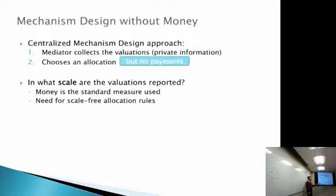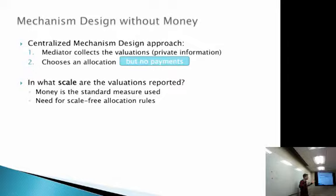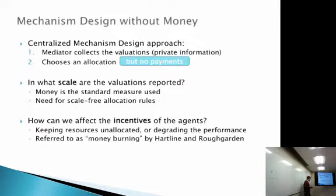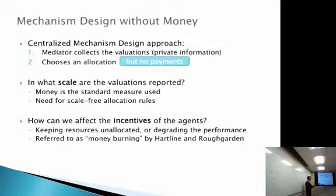Without payments, some questions arise: valuations — how much you value each item — become a strange notion because there's no monetary measure. Therefore, we need allocation rules that are scale-free: if you multiply your values by some constant, it shouldn't change the outcome. Also, the only way to affect incentives is by keeping some resources unallocated or degrading system performance — essentially introducing inefficiencies. This has been called money burning.